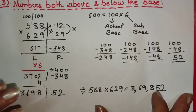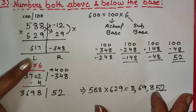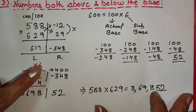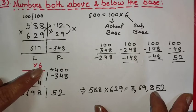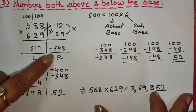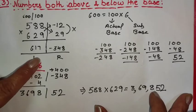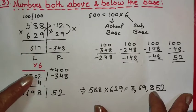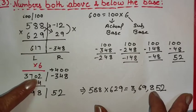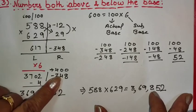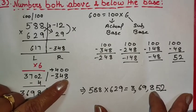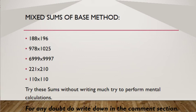An important rule to always remember when applying the base method: whenever changes are required on both the left-hand side and the right-hand side — as here, where we multiply the LHS by 6 and also remove the minus sign on the RHS — always take care of the left-hand side first, then move on to the right-hand side.